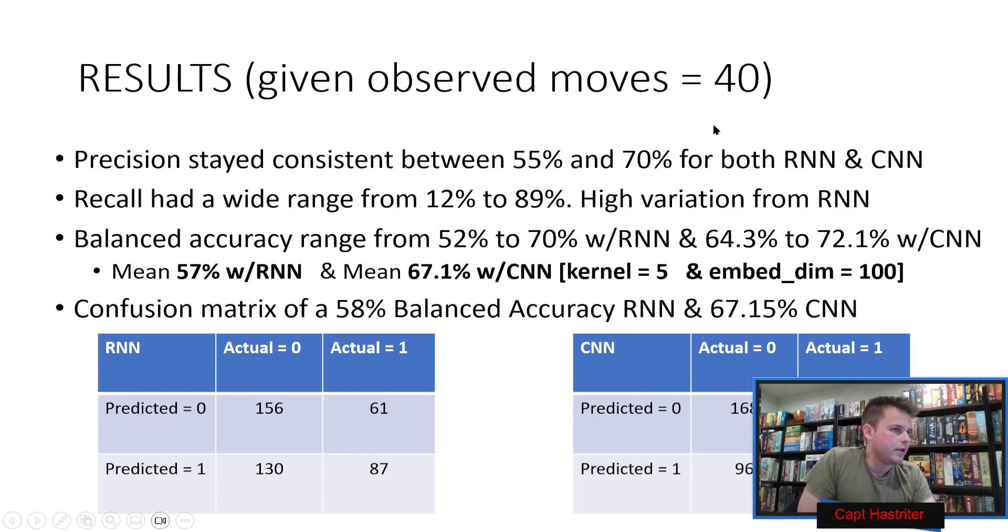The precision, I'm happy to report, stayed pretty consistent, 55% to 70%. The recall was all over the place with both the RNN and the CNN, but especially the RNN. Balanced accuracy, we had a wide range. There was a weird fluke that happened with one of the RNNs. But for the most part, we can put it out to an average of 57% balanced accuracy for an RNN and 67% balanced accuracy for the CNNs. There you have the different confusion matrices of similar accuracies.